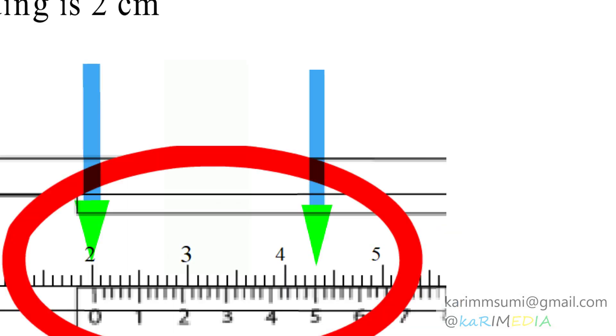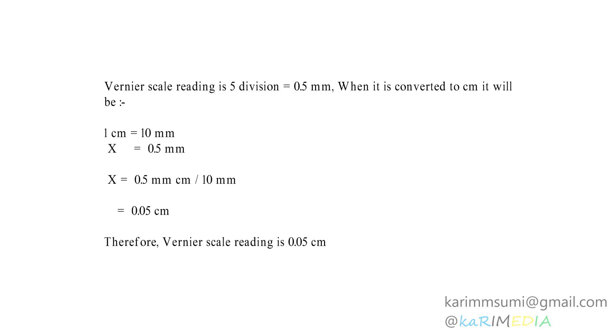Also, get the vernier scale reading by looking for the main scale reading line number which aligns equally with the same line number of the vernier scale reading. From the experiment, line 5 of the vernier scale aligns with line 4.3 of the main scale. So the vernier scale reading is 0.5 mm, which is converted to centimeters to match the main scale reading metrics.